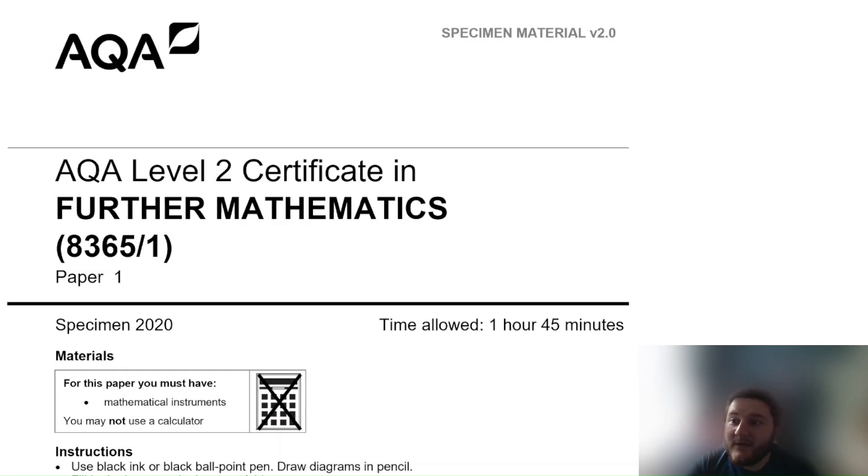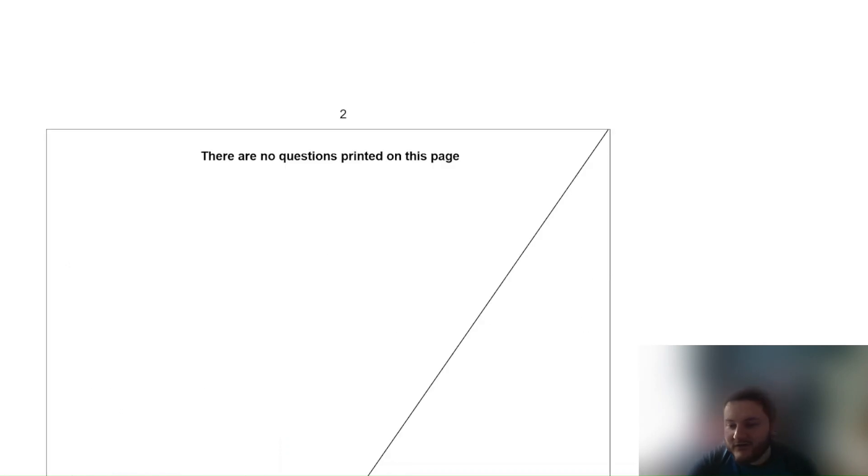Hi there everybody, Mr. Wilson here again to talk you through the AQA GCSE Further Maths specimen paper. This is the kind of paper that they release when they come up with a new specification for an exam just to give you an idea of what kind of questions they could ask. I'm going to talk through the sample paper today and probably go through the first few questions. Let's get straight into it then with question 1.